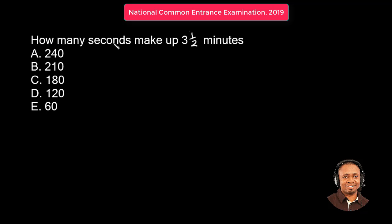How many seconds make up three and a half minutes? Three minutes. What this means is three minutes, and half minute is what? Thirty seconds. So now we need to convert these three minutes to seconds.